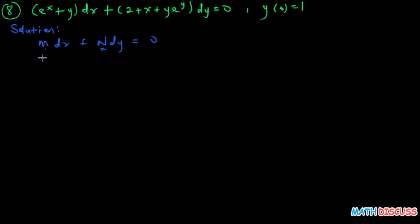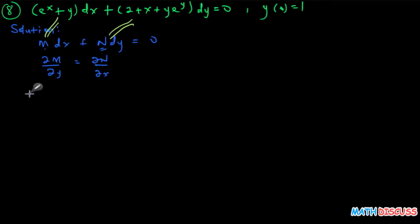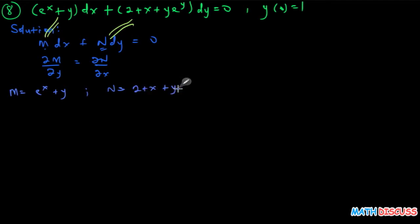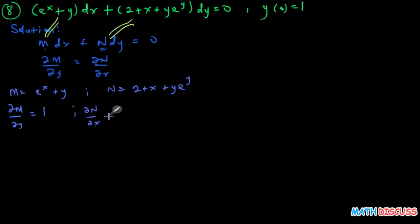For this to be an exact equation, the criterion it must satisfy is that the partial derivative of M with respect to y must equal the partial derivative of N with respect to x. Comparing the two equations, we observe that M equals e to the power (x + y), while N equals 2 plus x plus y·e^y. The partial derivative of M with respect to y gives 1, and the partial derivative of N with respect to x also gives 1. Since ∂M/∂y equals 1 equals ∂N/∂x, this is an exact equation.